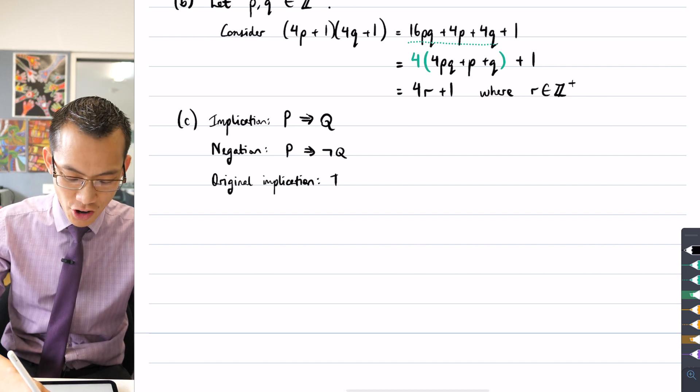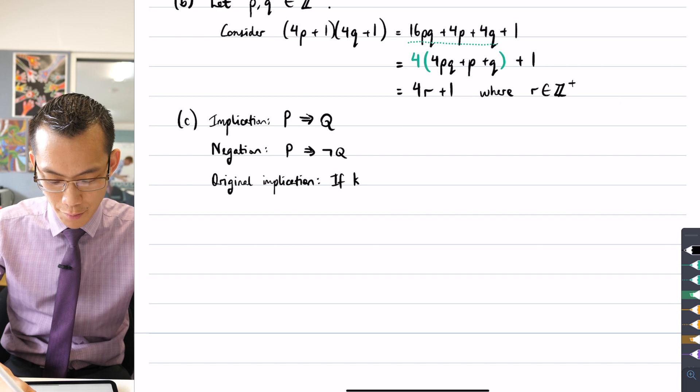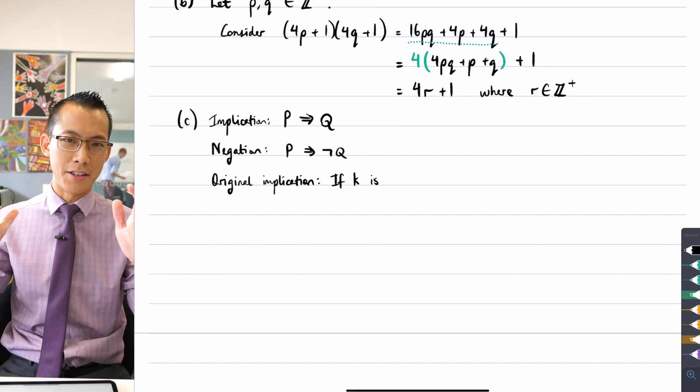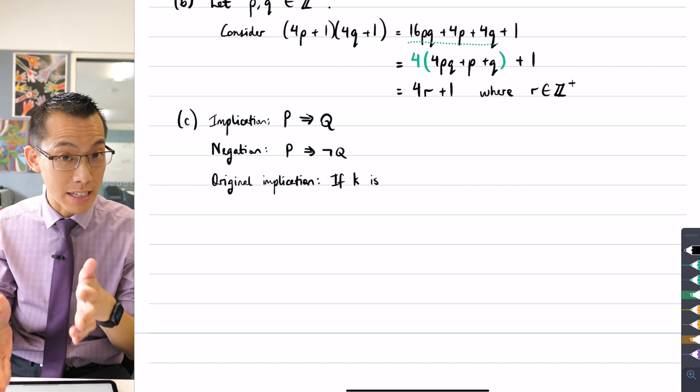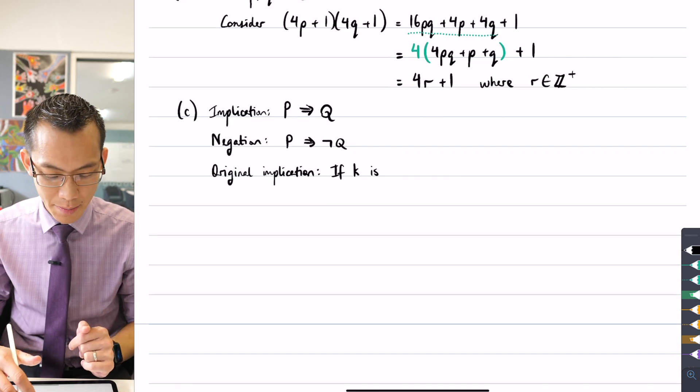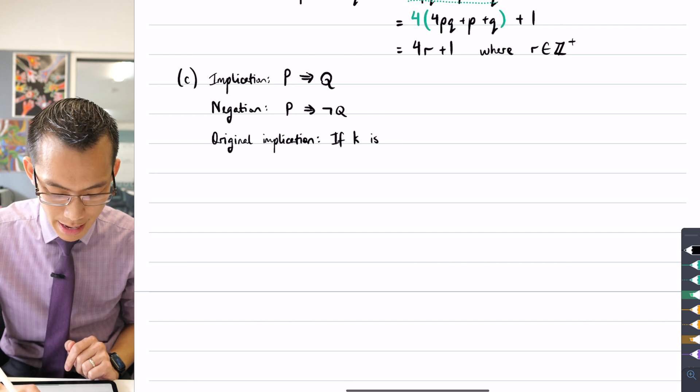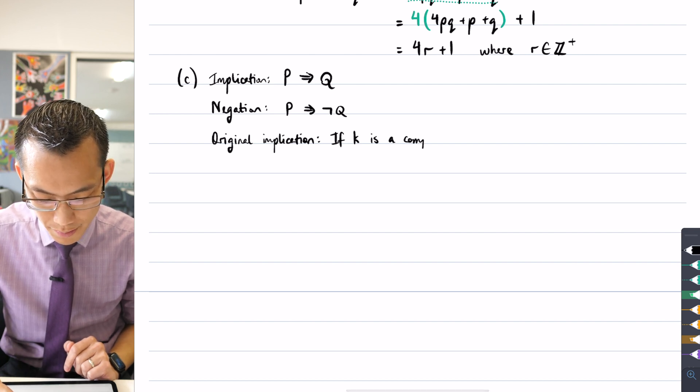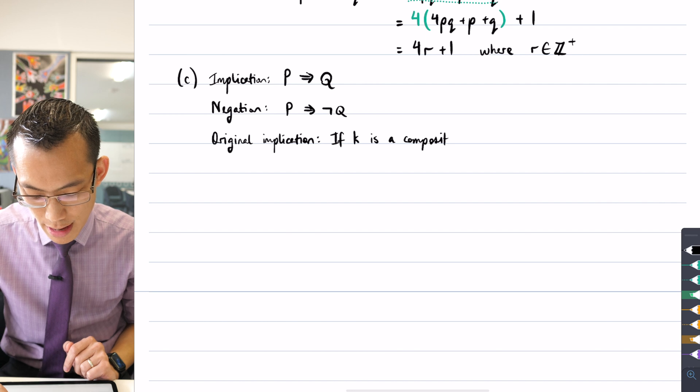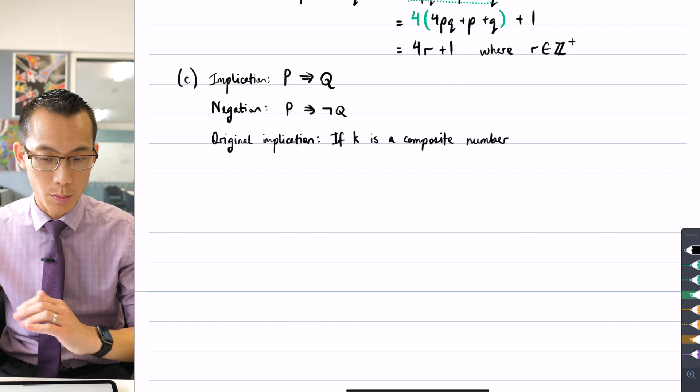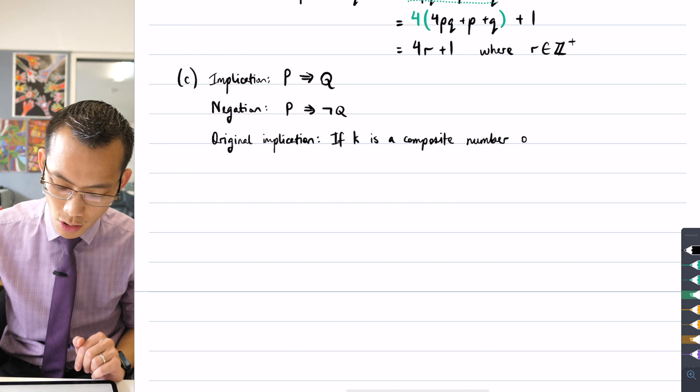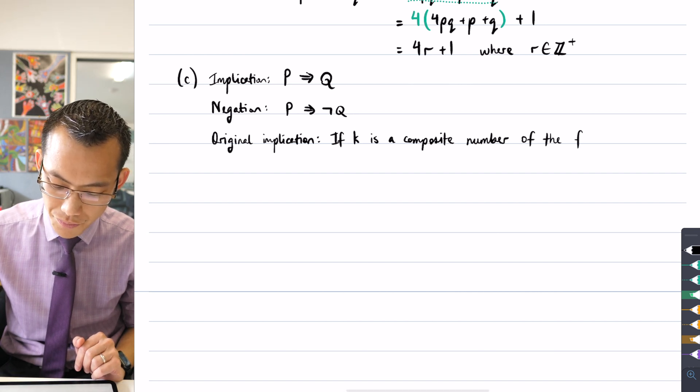So let's have a go at writing that. So the original implication is like so. If k is a composite number, I've already been told that right from the outset, and I'm going to introduce, I'm going to say right at the very end that k has these particular qualities that I need to meet. If k is a composite number, a composite number, and it's not just any composite number, it's one of the form 4n minus 1. So I'm going to write of the form 4n minus 1.